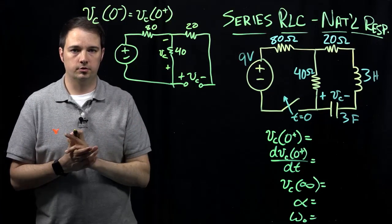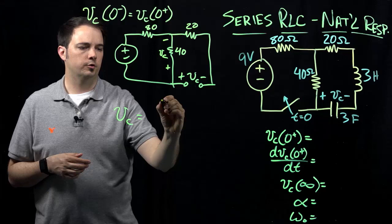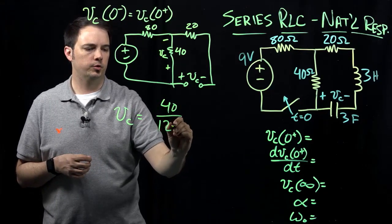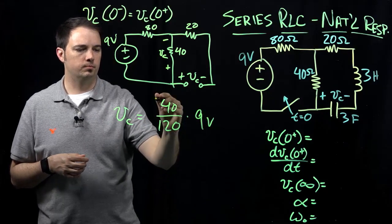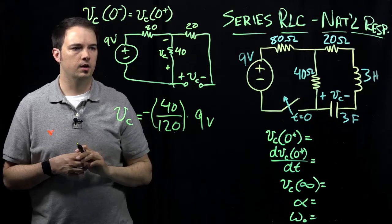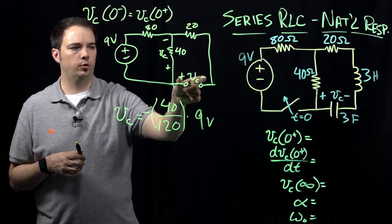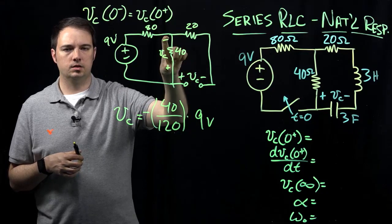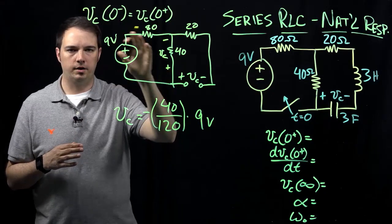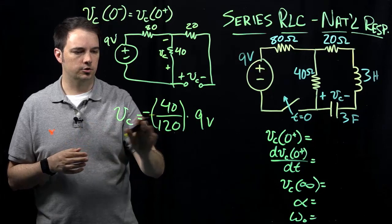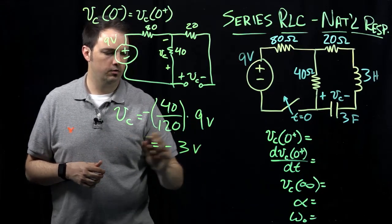We can apply a simple voltage divider expression here. VC is going to be equal to the ratio of the 40-ohm resistor over the combination of 40 and 80 ohms, which is 120, times the total voltage of 9 volts. There's one minor difference: I need a negative sign here because the polarity of the voltage source is plus to minus, which is in reverse with respect to the polarity of VC. If you write out the KVL equation around the loop, you'd confirm it equals a negative quantity. Evaluating this expression gives an initial voltage of negative 3 volts.